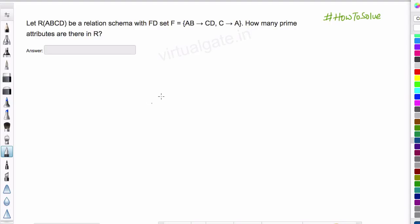Hello everyone, in this question we have to find out how many prime attributes are there in R. We have been given relation R with attributes A, B, C, D and we have to find out how many prime attributes are there.